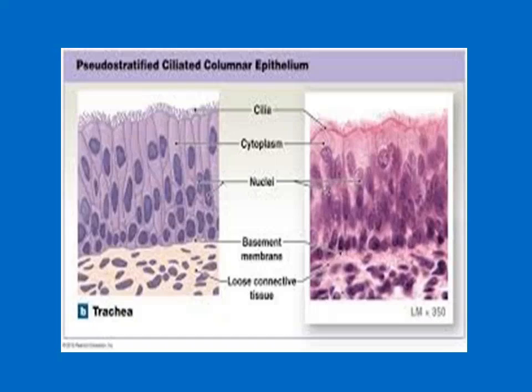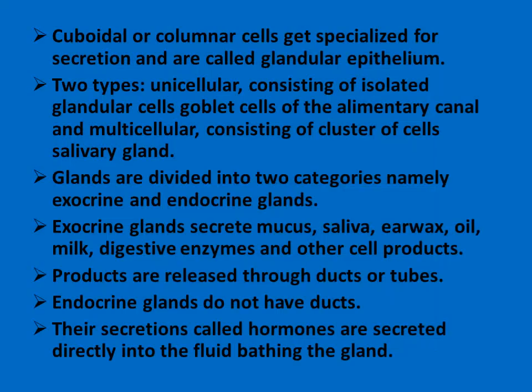Cuboidal or columnar cells get specialized for secretion and are called glandular epithelium. There are two types: unicellular, consisting of isolated glandular cells such as goblet cells of the alimentary canal; and multicellular, which is a cluster of cells such as the salivary gland.